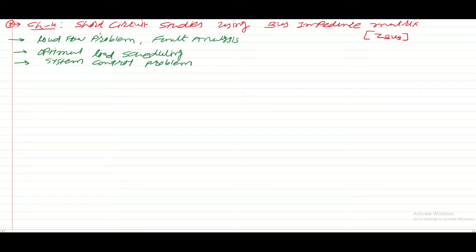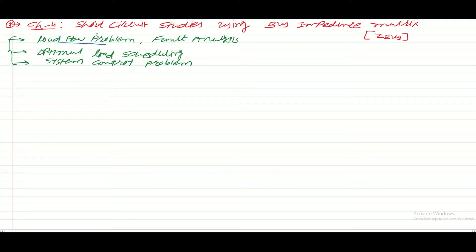So for power system analysis and control, our whole subject is divided into these three major parts. From this, we have already studied the load flow problem, and in this chapter we are going to study about fault analysis.